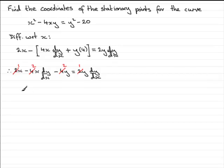Now, I'll leave it up to you just to check the rearrangement of this, but if you rearrange this now, dy by dx will equal x minus 2y all over y plus 2x.